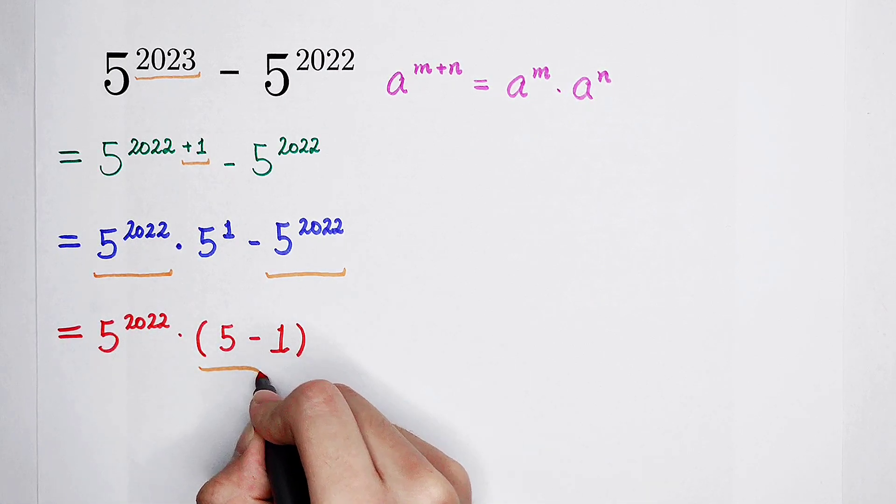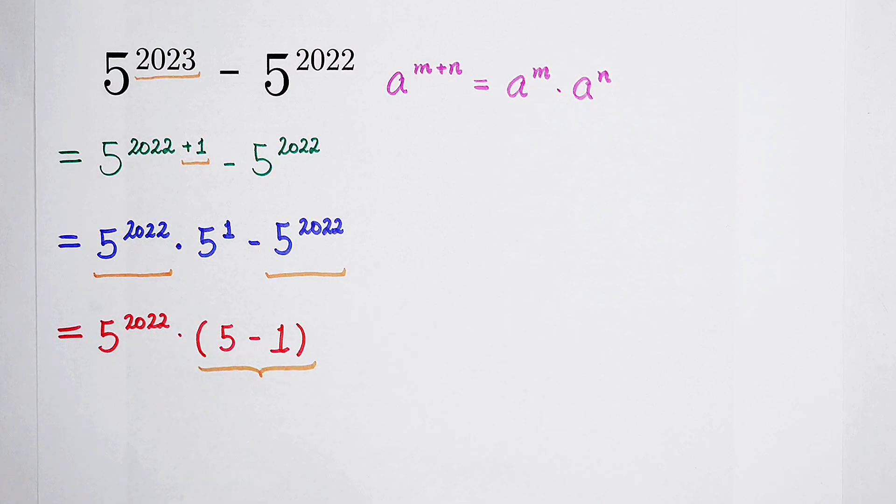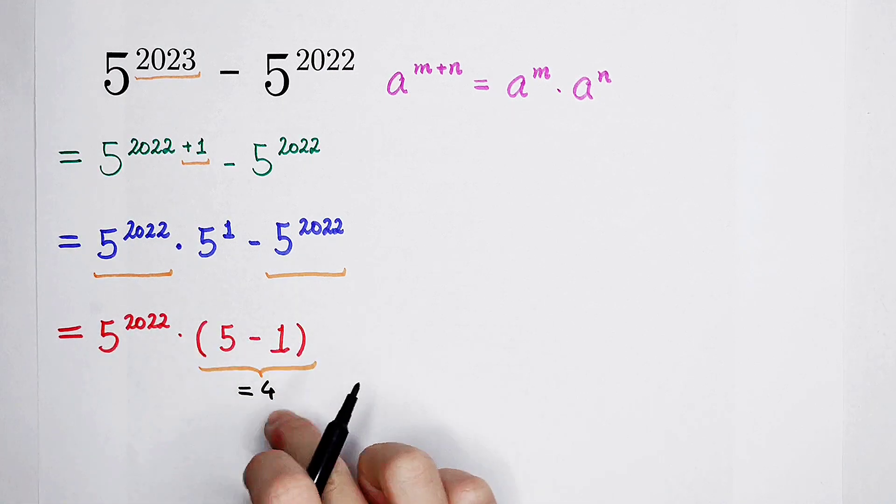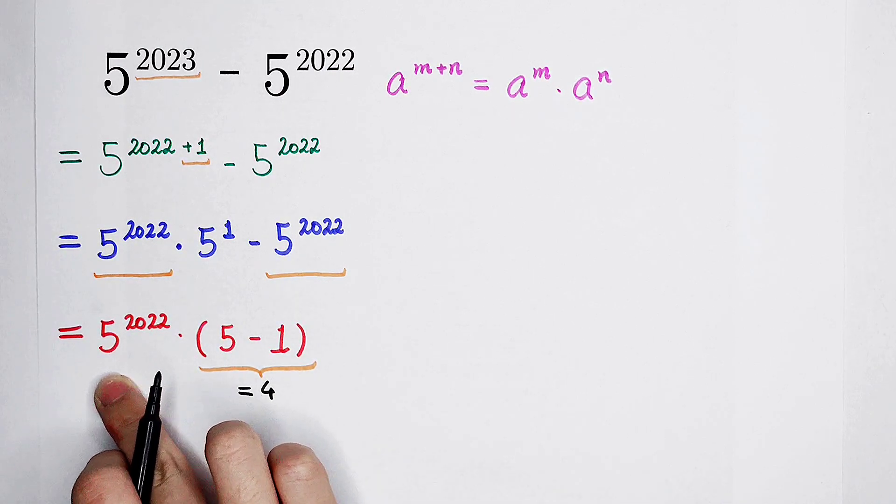And then, what's in the bracket? We can calculate it directly. 5 minus 1, it is 4. So the result in the bracket is equal to 4, and then times 5 to the power of 2022.